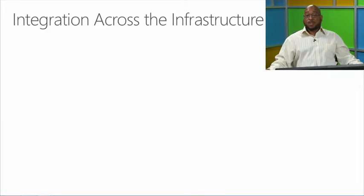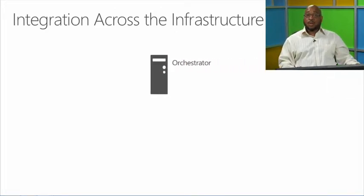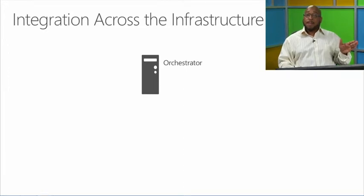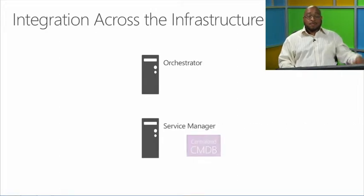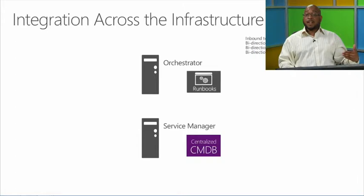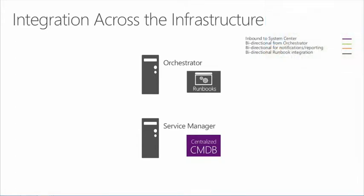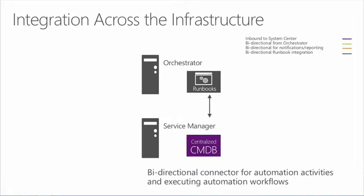Integration across the infrastructure — what does this look like? Orchestrator is the key piece that connects to each of our components within the enterprise as well as third-party assets. Orchestrator touches Service Manager, and this is where I think about the runbooks in Orchestrator as well as the data I need to bring into the CMDB. The data bus is very helpful in achieving this capability, and I have a bi-directional connector that brings information between the runbooks and the CMDB.